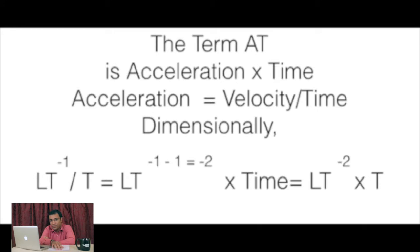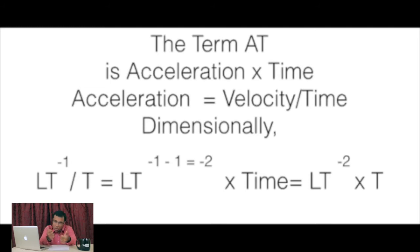Now let us come to the acceleration into time term. Acceleration is nothing but velocity per unit time — it is the rate of change of velocity, that is change of velocity per unit time. The numerator is a velocity parameter. Rate of change of velocity is V2 minus V1, which is subtracting two components of the same velocity. Since it is a closure property, the resultant is also velocity. So acceleration is delta V by delta T — rate of change of velocity by rate of change of time.